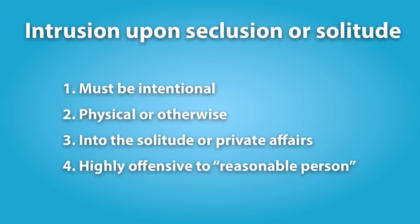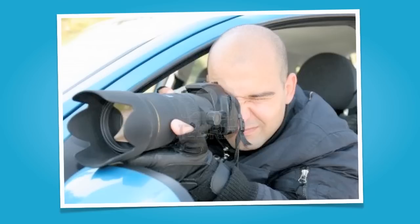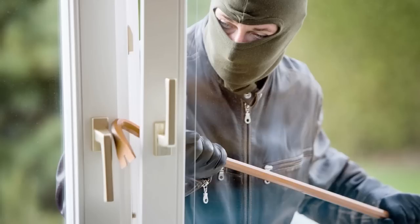Some examples of a valid claim for intrusion upon seclusion include: eavesdropping on a private conversation by means of wiretapping, microphones, or hidden recording devices where participants had a reasonable expectation of privacy; using a telephoto camera lens to peer into the bedroom of a home; making unwanted and persistent telephone calls to someone's home late at night; or invasion of a person's home. These examples may also constitute crimes such as stalking, cyberbullying, or trespass.